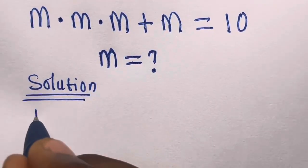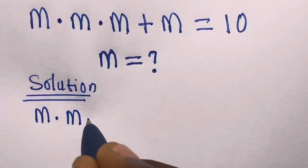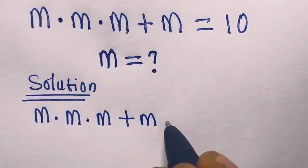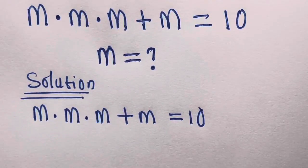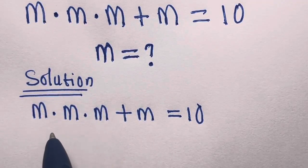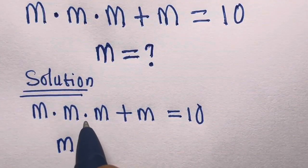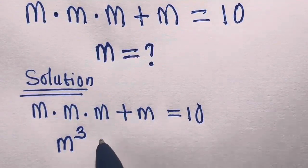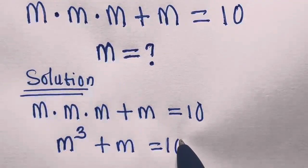We have M times M times M plus M equals 10. From here we have M squared times M, that is M cubed, plus M equals 10.